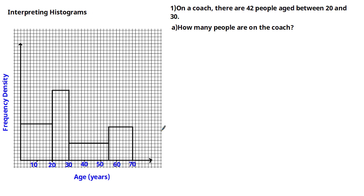We're given a histogram and told that on a coach there are 42 people aged between 20 and 30. The first part asks us how many people are on the coach. We've been given the number of people aged between 20 and 30, which represents this class interval in the histogram, so let's label this as 42.